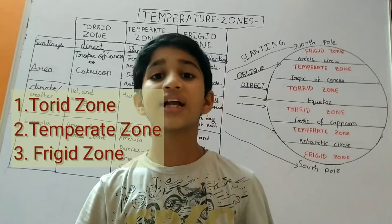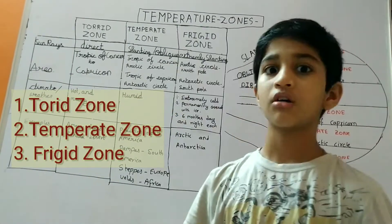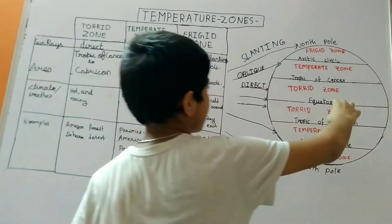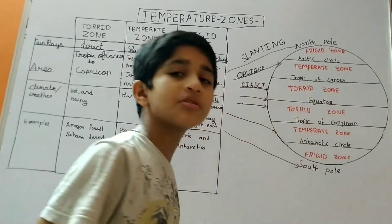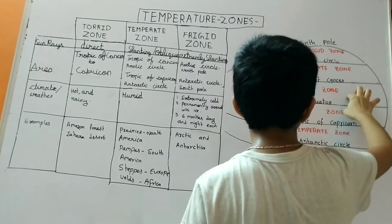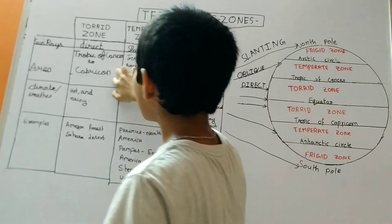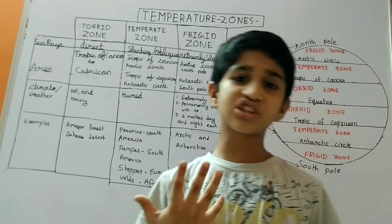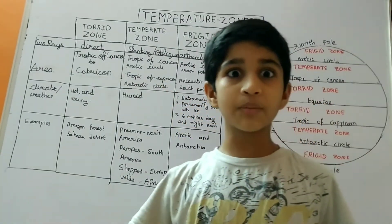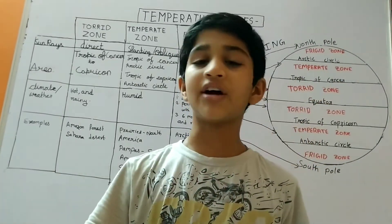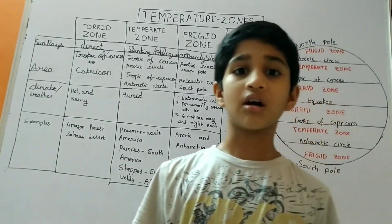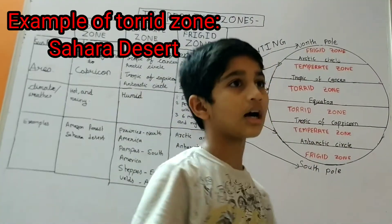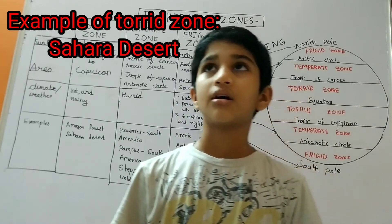The first one is the torrid zone. The second one is the temperate zone, and the third is the frigid zone. The torrid zone is also called the equatorial region. This torrid zone extends from the Tropic of Cancer to the Tropic of Capricorn. The weather here is extreme — it will be very hot and rainy. It is not normal like where we live in India or other places on Earth. The examples are Amazon forest and Sahara desert.